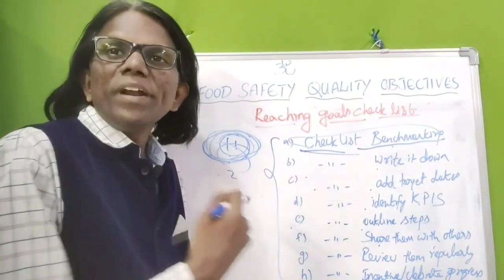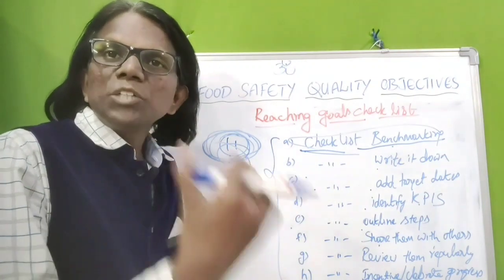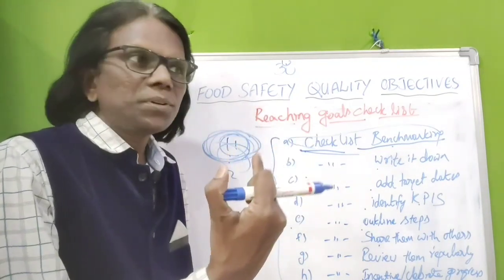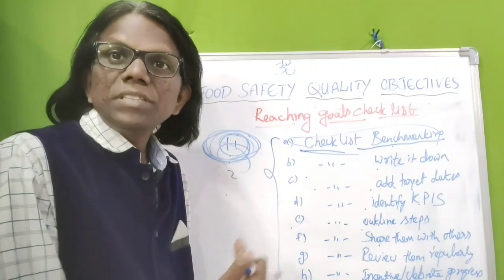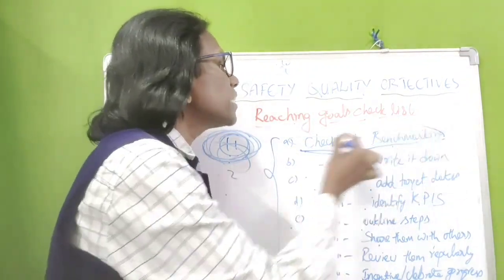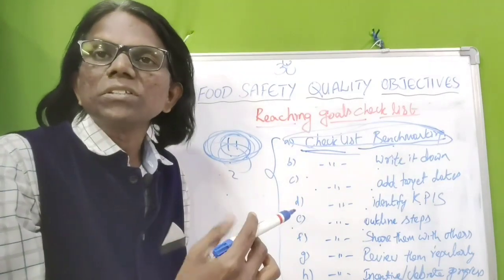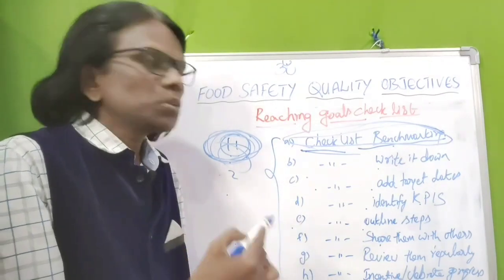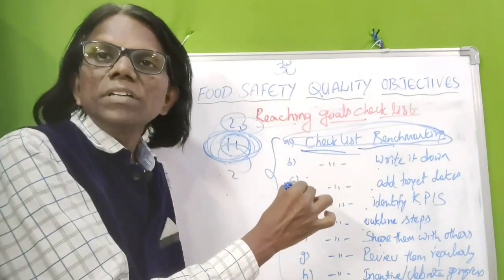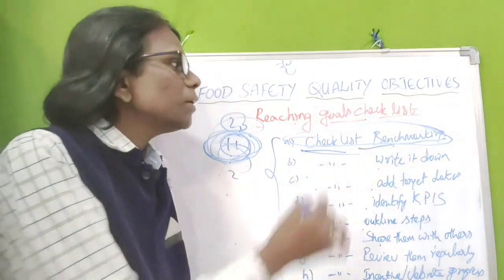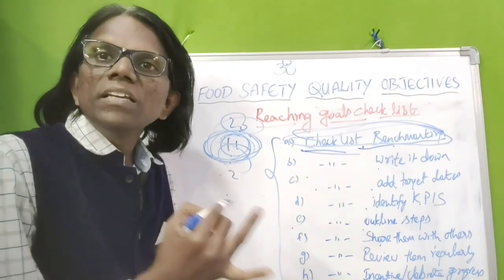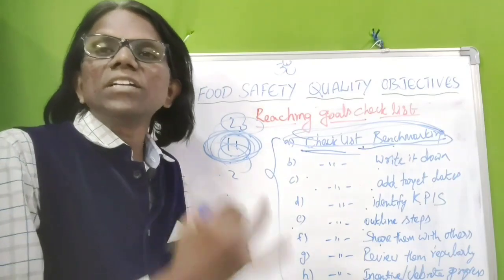Another example: reduce rework by 30-50% from the previous year. If the previous year you reprocessed about 200 metric tons, then a 50% reduction means the target is 100 metric tons. You collect previous year data to establish the benchmark and measure clear success or clear targets for the present goals.